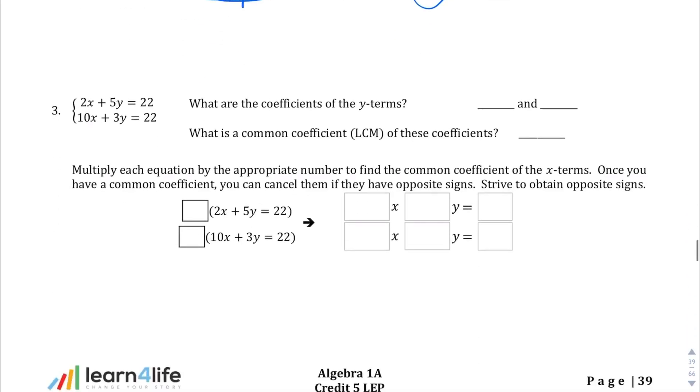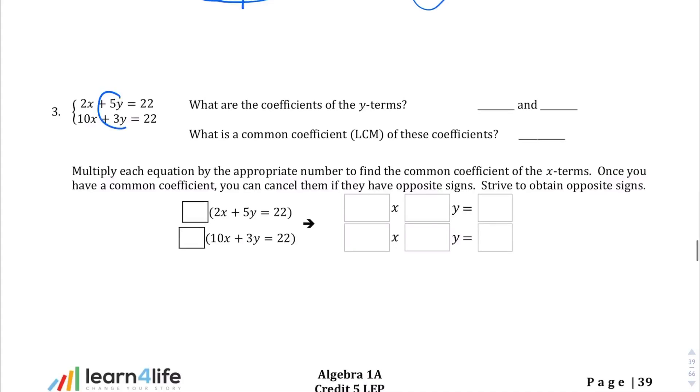Okay, question number 3. Let's think about this. What are the coefficients of the y terms? We're going to go with the y terms. But here you'll notice that they're both positive, and they tell us strive to obtain opposite signs. So we're going to have to get a little creative with this, how to set this up. But let's think about what the coefficients are first. So the y terms are 5 and 3. The least common multiple of the coefficients is 15, since if we multiply 5 and 3 we get 15, and 3 and 5 don't go into each other. So 15 is going to be our LCM there.